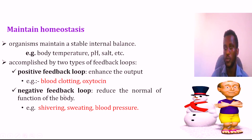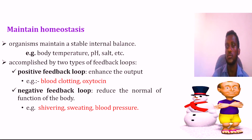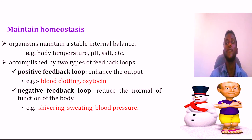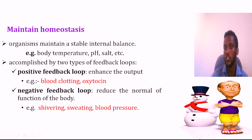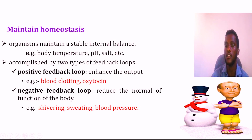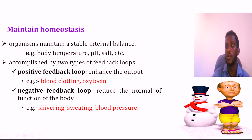The other mechanism is negative feedback. The negative feedback loop is when a stimulus suppresses or inhibits normal body functions to restore balance. This is the main mechanism for maintaining body temperature and other homeostatic processes.